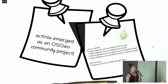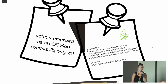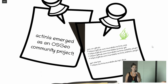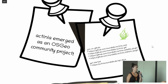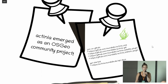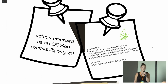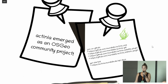Great news: Actinia became an OSGeo community project this year. You can find us on GitHub at Mundialis/actinia-core, and there are already some plugins such as the satellite plugin and a statistics plugin. The API docs are also great for getting an overview of what Actinia can do and listing all available endpoints.